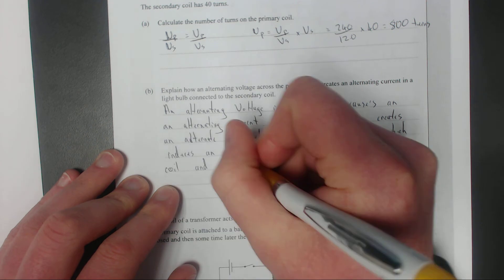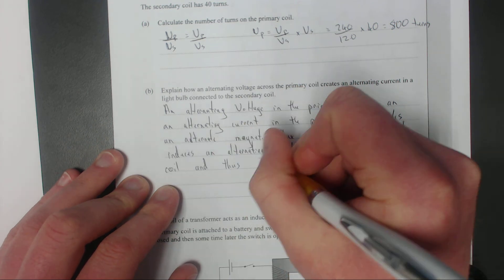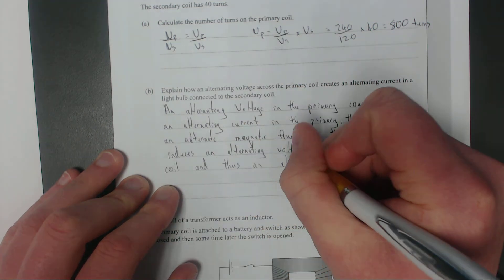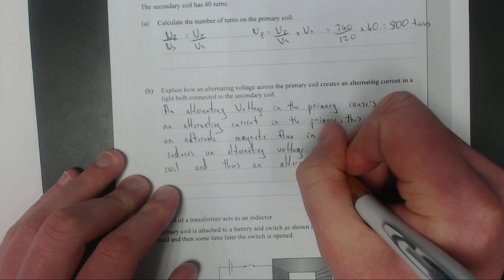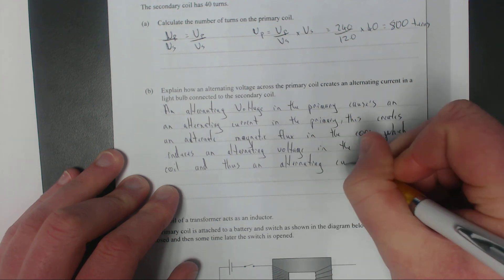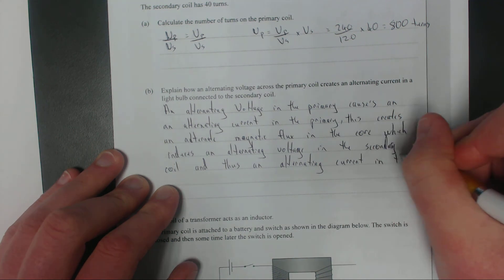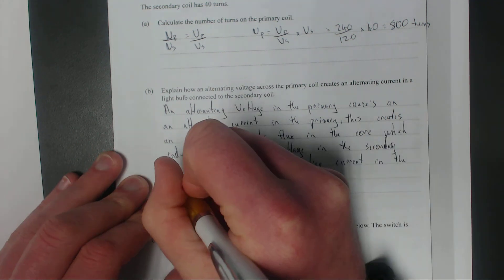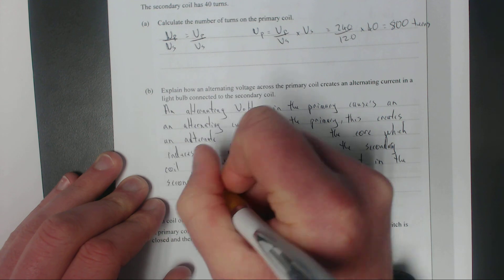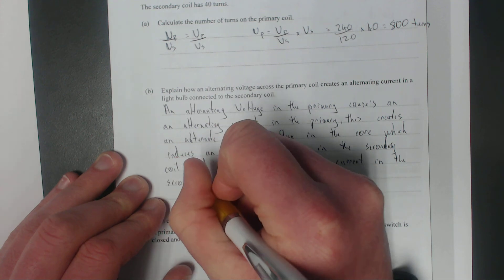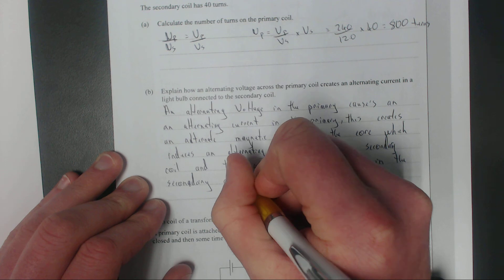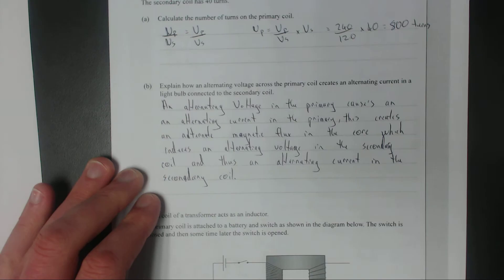Which induces an alternating voltage in the secondary coil. And thus an alternating current in the secondary coil. There we go.